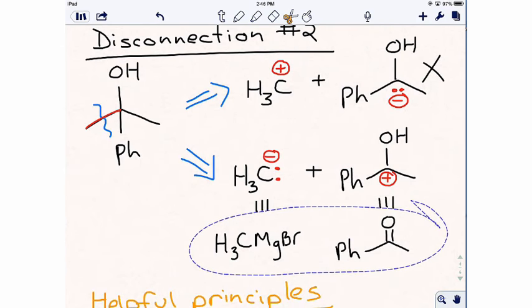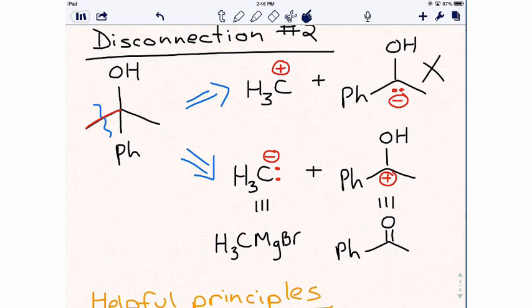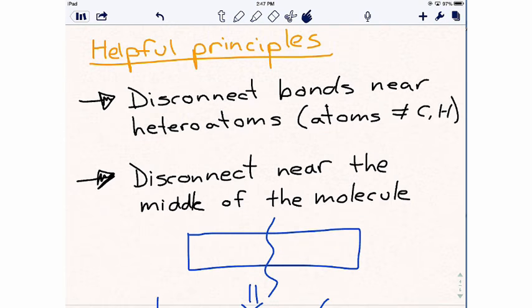Very often, you will have to disconnect those reagents even further to further simplify the molecule that we are trying to make. Try to disconnect the bonds near heteroatoms, because those heteroatoms form the basis of chemical reactions. Disconnect near the middle of the molecule as much as possible, in order to have the most efficient type of synthesis.